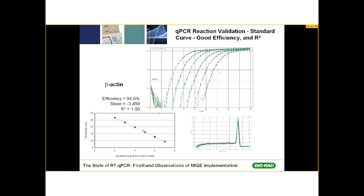The standard curve is used to assure reaction efficiency is between 90 and 110%, and that your unknowns all fall on the standard curve by diluting them per primer pair to the middle of each standard curve. On a primer-pair-by-primer-pair basis, your unknowns may need different dilutions depending on whether you have high-, medium-, or low-expressor targets.